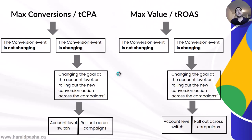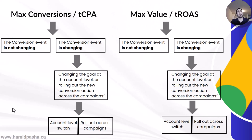The decision tree that we are going to review in this video looks like this. On the left side, we are reviewing whether currently you are using target CPA and you want to move toward target ROAS. In that case, there are two scenarios: whether your conversion event is not changing or is changing.